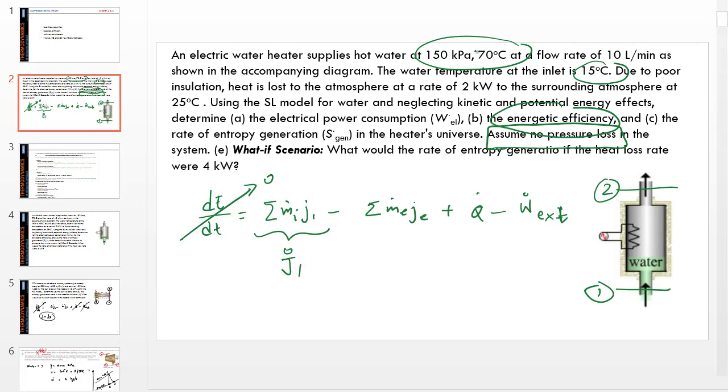Similarly, j2 dot can be calculated. Q dot is given to us, and therefore we can calculate external power transfer. The energetic efficiency is the desired quantity, the gain in energy as the water passes through the heater.